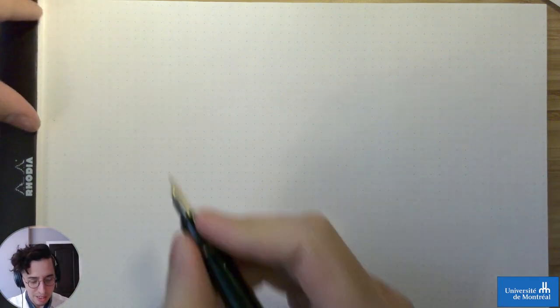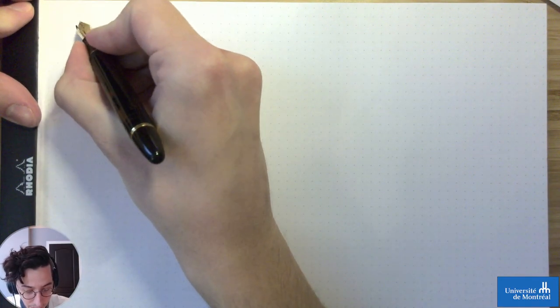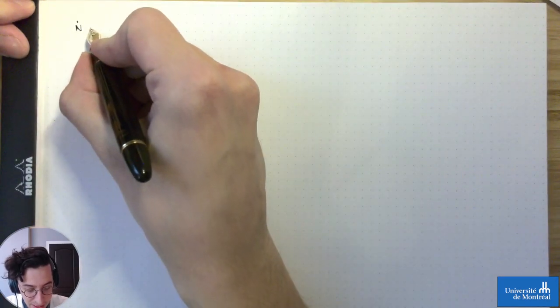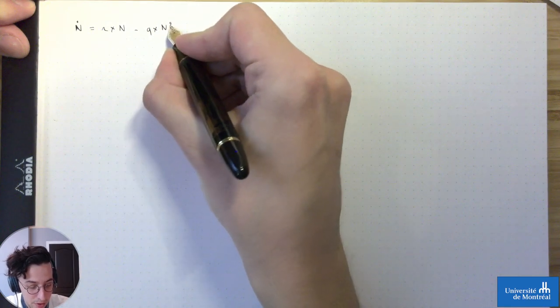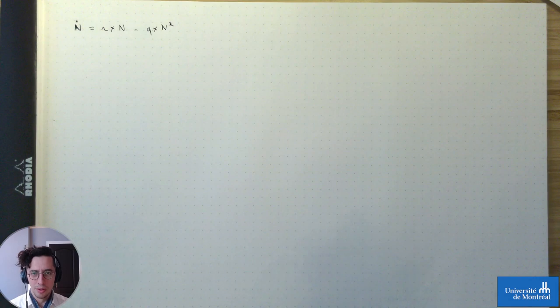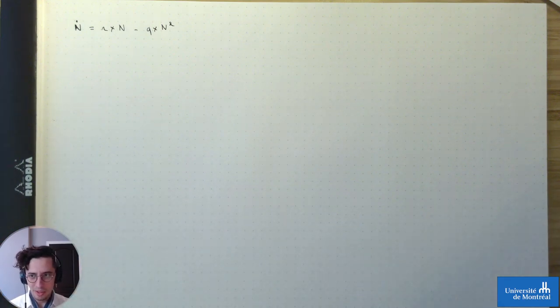Là, ce qu'on va faire pour s'amuser un peu plus, c'est qu'on va rajouter un prédateur. On va toujours appeler la proie n. On va simplifier la notation : on va écrire ṅ à la place de dn/dt, parce que sinon je vais écrire 5000 fois d/dt sur l'ensemble de la session. Donc ṅ = r×n − q×n². C'est notre modèle de croissance — il y a de la croissance, il y a de la compétition. Si vous enlevez q×n², on a ṅ = r×n, que vous avez probablement reconnu comme étant un modèle de croissance exponentielle.